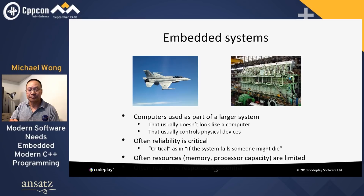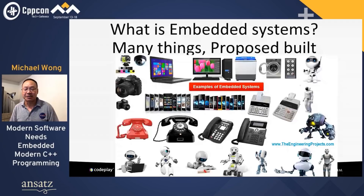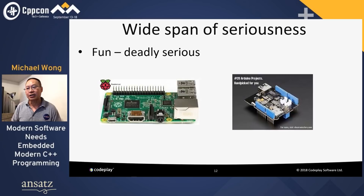It is many things, and often it's purpose-built. It's a wide spectrum. Computing systems embedded within electronic devices — nearly any computing system other than a desktop. Billions of units are produced yearly versus millions of desktops, maybe 50 per household and per automobile. They span a wide range of seriousness, from fun things like a Raspberry Pi, to deadly serious systems controlling nuclear reactors or vehicles.